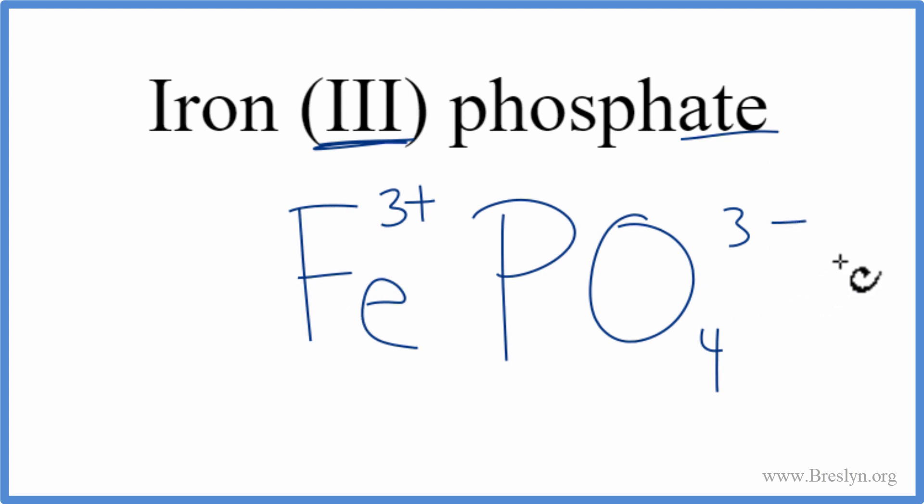So this is the formula for iron-3-phosphate. Let's clean this up. And that's it, iron-3-phosphate. Fe, PO4.